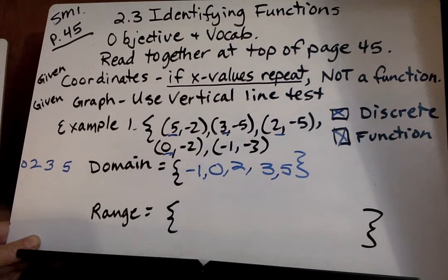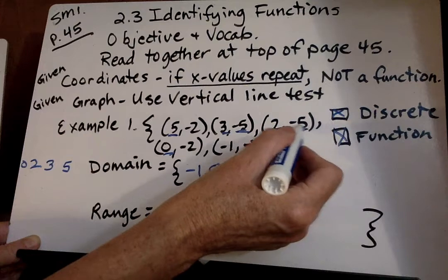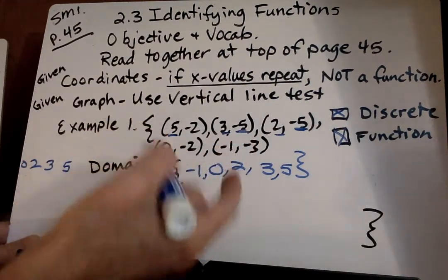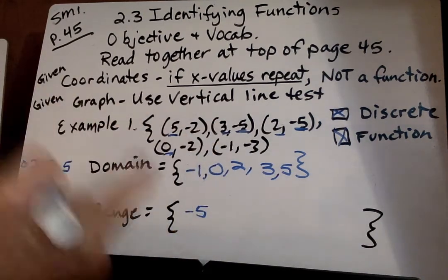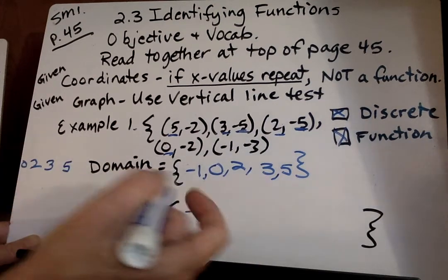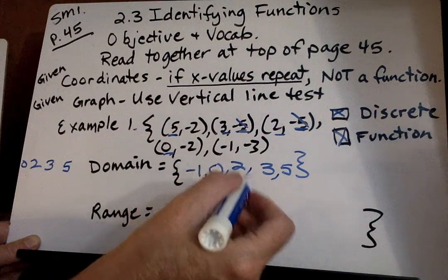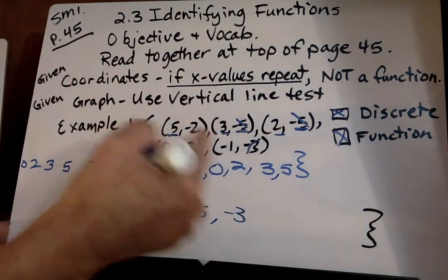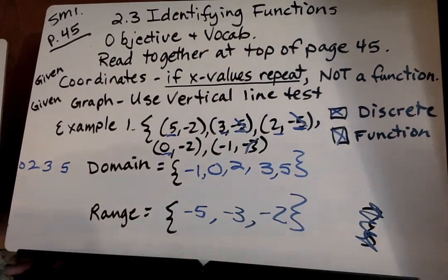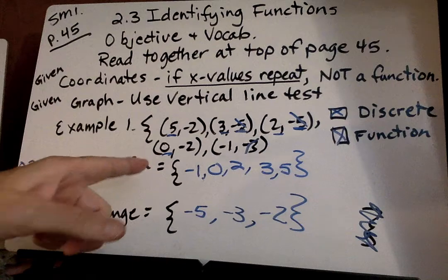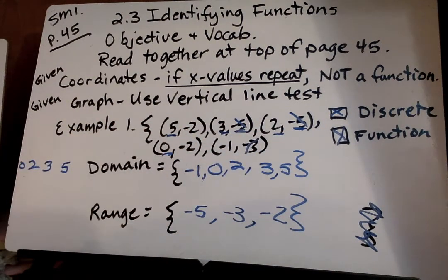Okay we're going to go ahead and list the range. Now it's okay if we have the same number twice in the range. It still is a function. But we do want to put the lowest first which is going to be negative 5 and if it's listed twice we still don't have to list it twice here. So we can put negative 5 then we go negative 3. Now see how negative 2 is listed twice? We only need to list it once. And then we're done with our range and we're finished. So it's a discrete relation here. It's a function because every x value is different. The range or the y values don't matter when deciding whether something is a function or not.